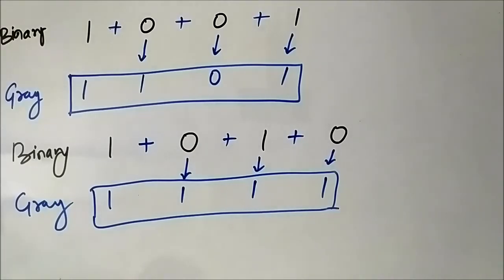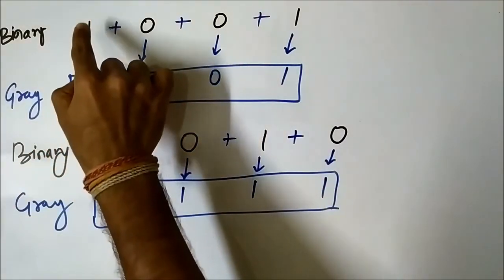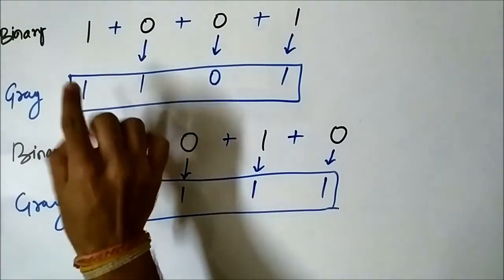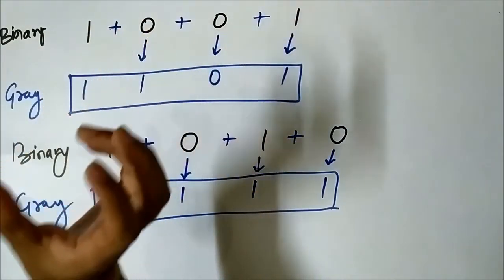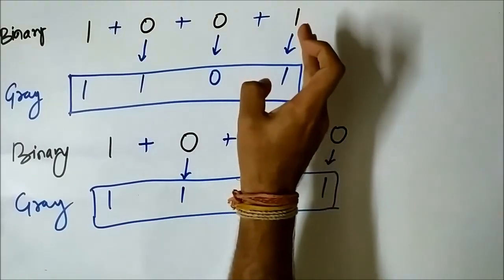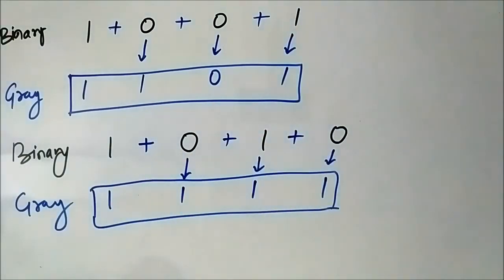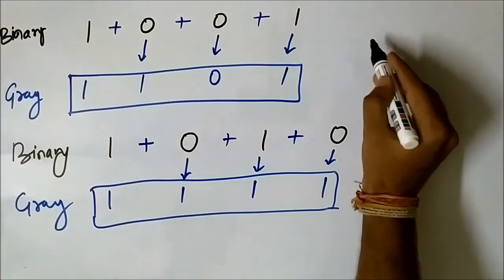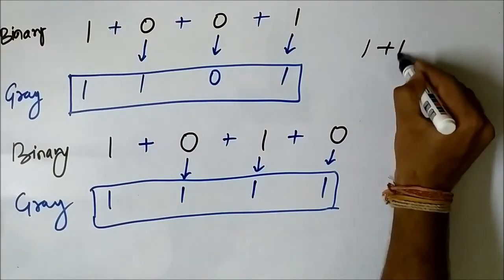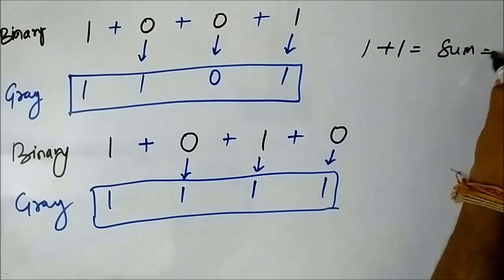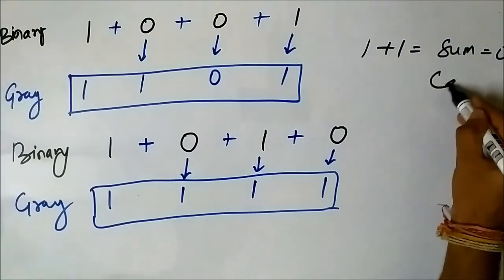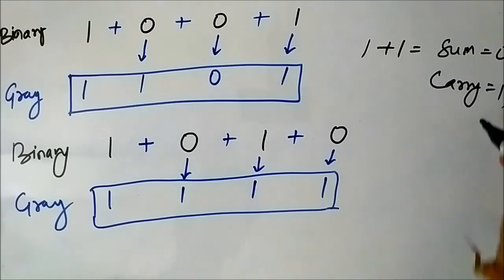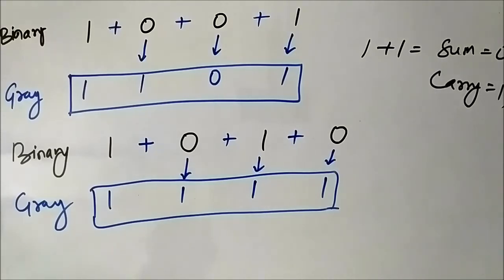So this is the trick: first step, copy the MSB of the binary same as that of the gray. Then perform addition of the adjacent pair of bits until you reach the last bit. Another important rule: if you come across an addition like 1 plus 1, consider the sum equals 0 and discard the carry equals 1 — you have to ignore that carry. This is the basic concept of binary to gray conversion.